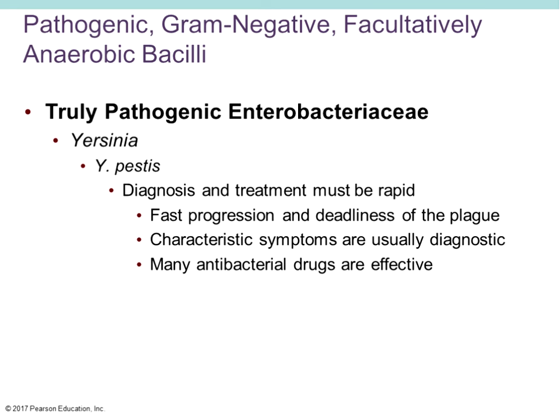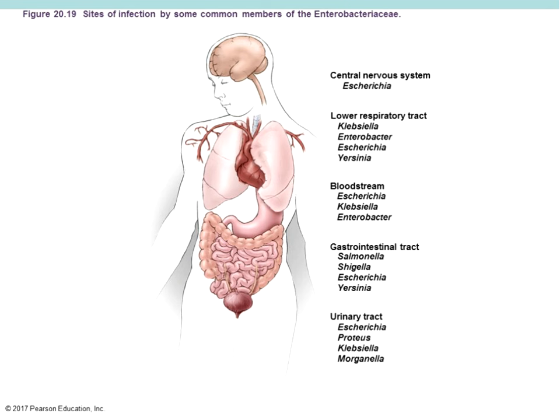Characteristic symptoms, especially in patients who have traveled to areas where the plague is endemic, are usually enough for diagnosis. Rat control and better personal hygiene have largely eliminated the plague in most industrialized countries. Wild animals remain reservoirs in the southwestern United States. A vaccine has been tested in humans but is not commercially available. Effective antimicrobial drugs include streptomycin, erythromycin, doxycycline, ciprofloxacin, and others.